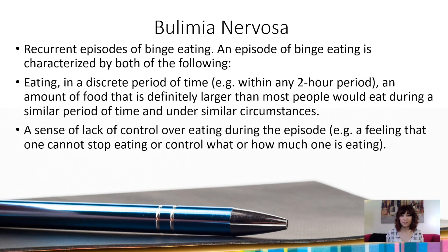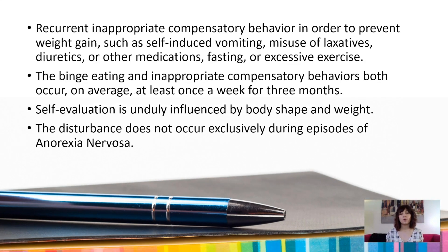The next one is bulimia nervosa. This is characterized by recurrent episodes of binge eating. An episode of binge eating is characterized by eating in a discrete period of time, typically around two hours, an amount of food that is definitely larger than most people would eat under similar circumstances, and a sense of lack of control over eating during the episode. There's also recurrent inappropriate compensatory behavior to prevent weight gain, such as self-induced vomiting, misuse of laxatives, diuretics or other medications, fasting, or excessive exercise.